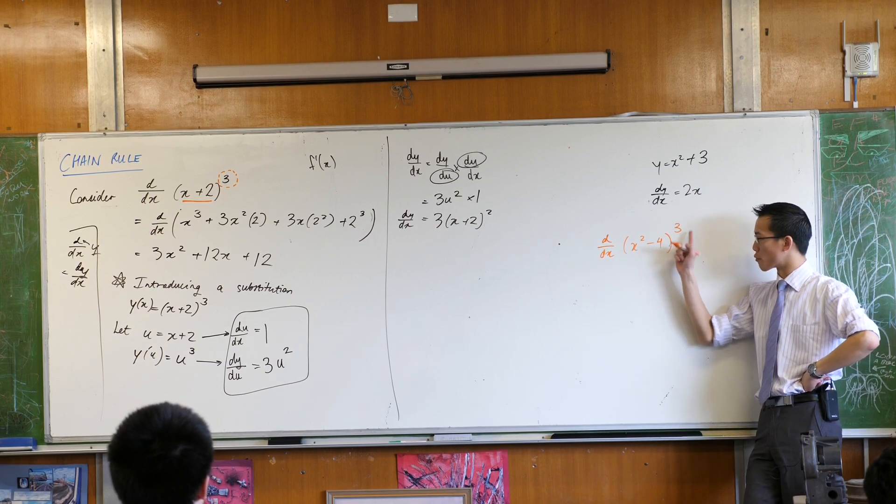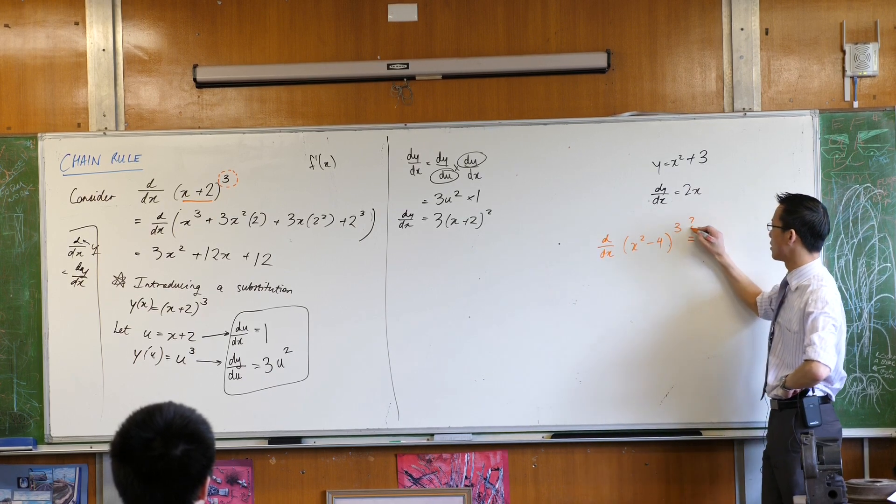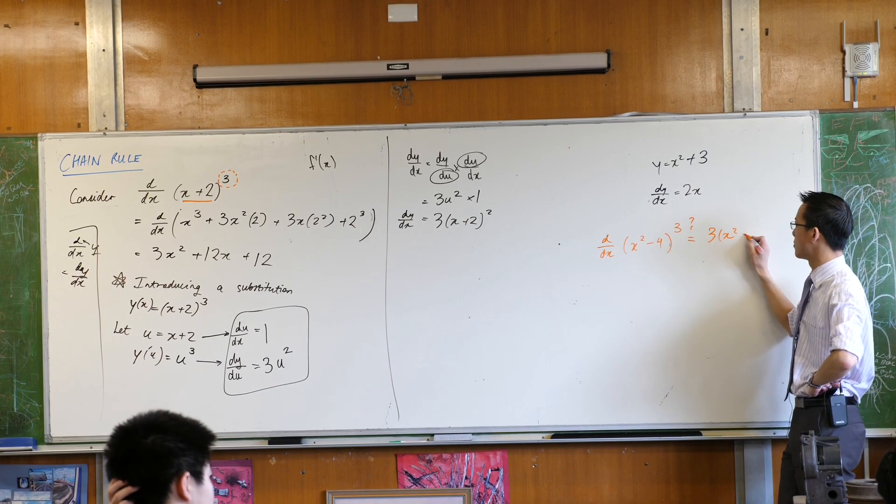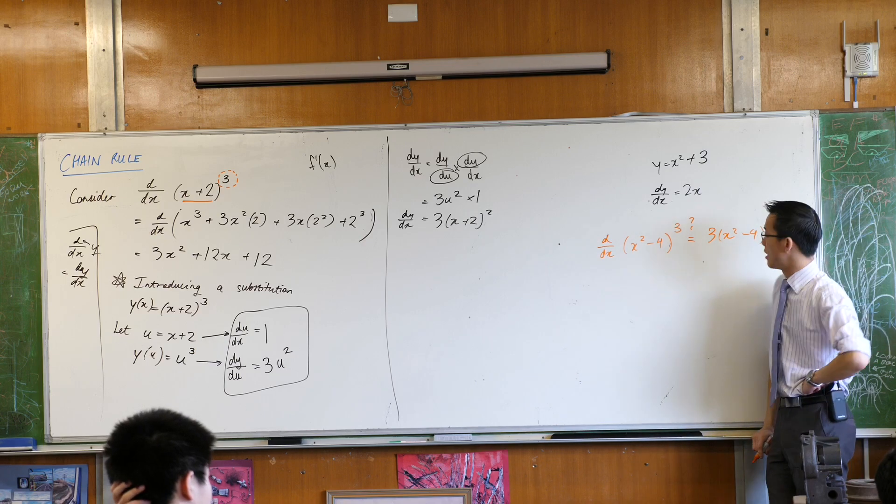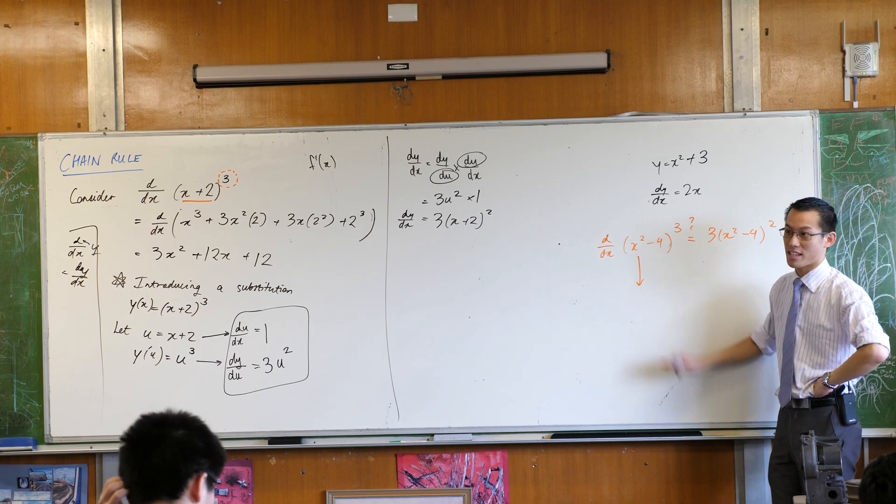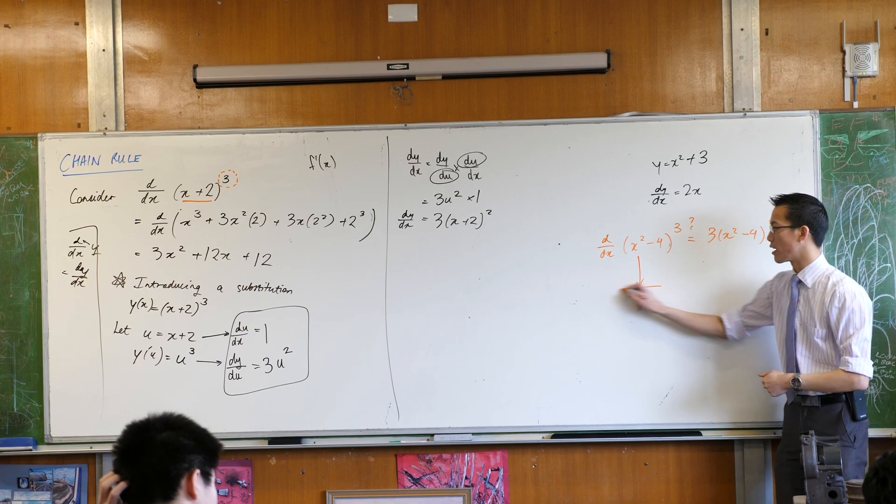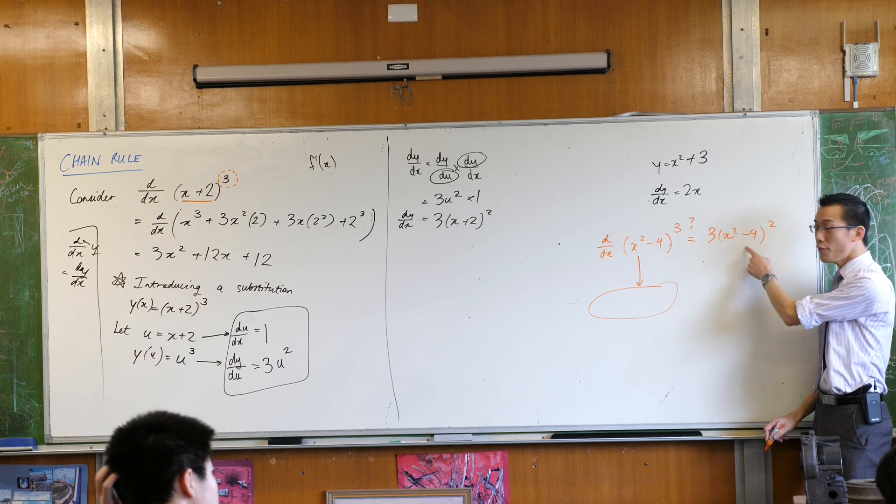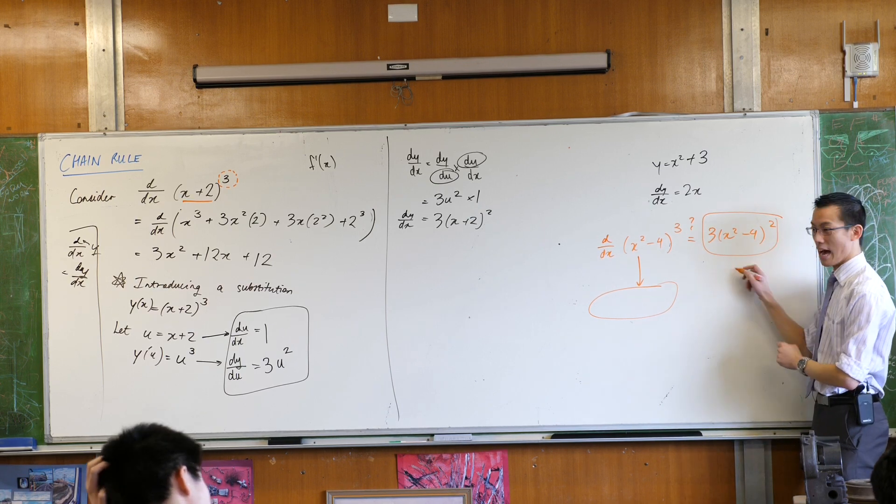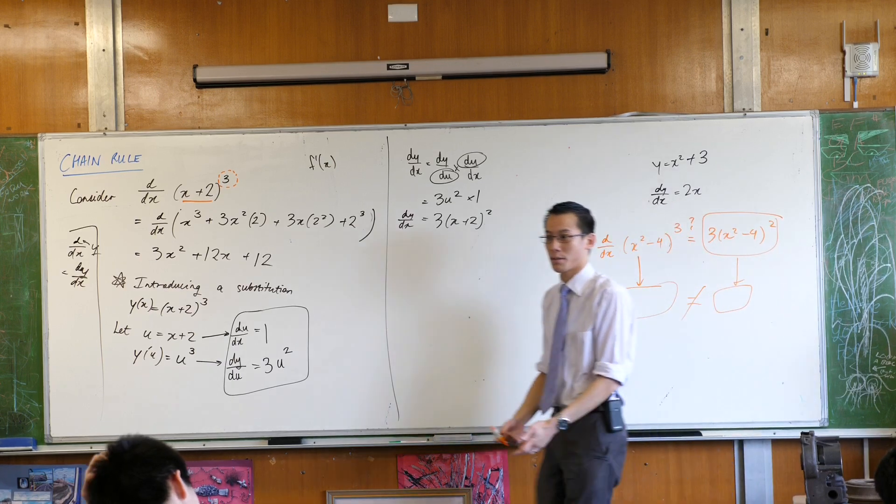How come I can't just bring this power out the front and then reduce it by 1? How come I can't just say this? And the answer is because you'll get the wrong answer. If you go ahead and you do the expansion, you'll get your four terms, you'll see what happens with the powers, and then you'll get an answer at the end. If on the other hand you try this and expand it, you will not get the same thing. It just doesn't work.